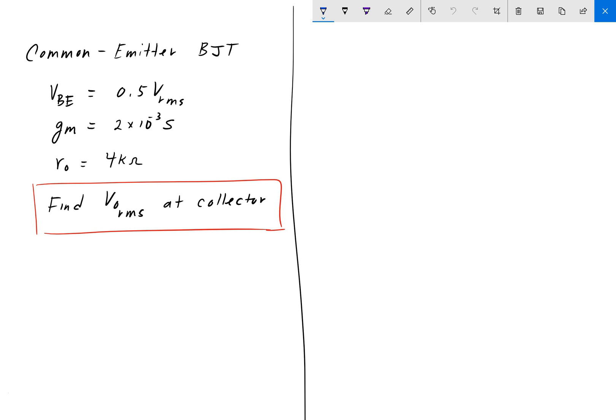of this BJT, given that VBE is 0.5 volts, the transconductance is 2 millisiemens, and the output resistance is 4k.